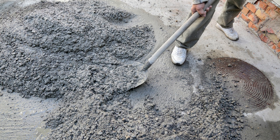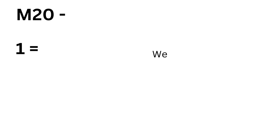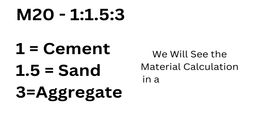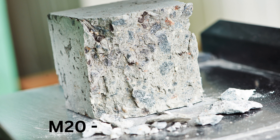Concrete comes in a ratio — for example, M20. The M20 ratio is 1:1.5:3, where 1 denotes the cement content, 1.5 denotes the sand content, and 3 denotes the aggregate content. If you mix cement, sand, and aggregate in this ratio along with water, you get a concrete mix of M20. That means after 28 days of curing, you will get 20 Newton per mm² of compressive strength.